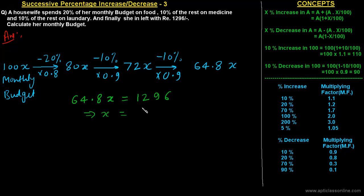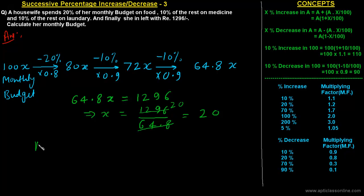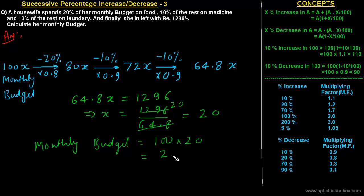From this we can get the value of x as 1296 divided by 64.8. Since 648 multiplied by 2 is 1296, the value of x is 20. So the monthly budget will be 100x, which means 100 multiplied by 20, which comes out to be 2000. The monthly budget is 2000. We have seen how with the help of multiplying factors we have solved this problem so easily. We will see more examples in the next class.